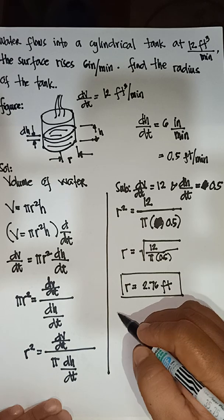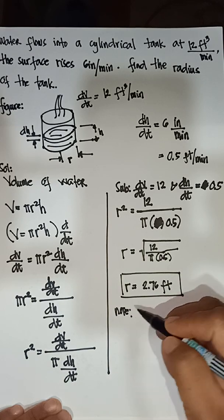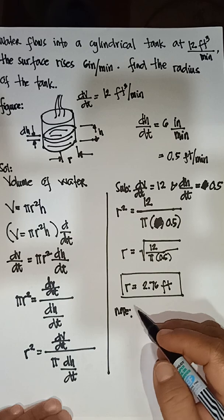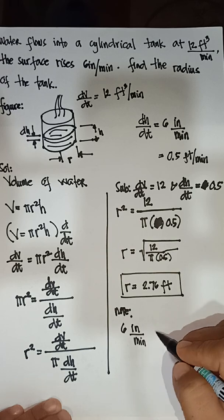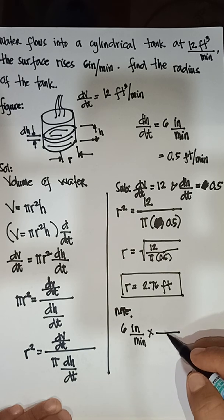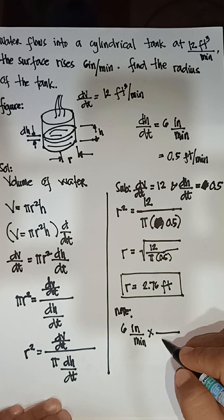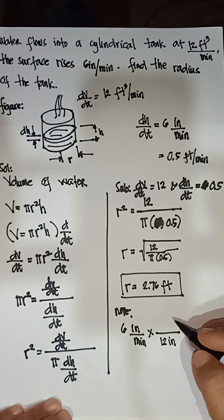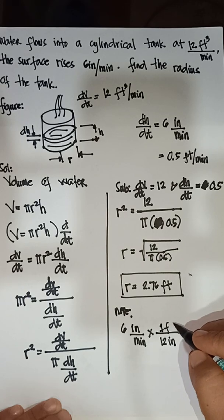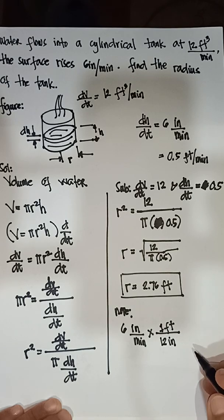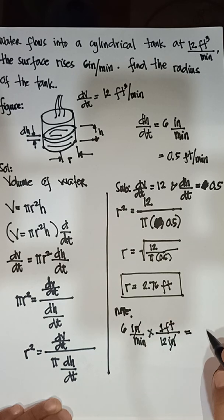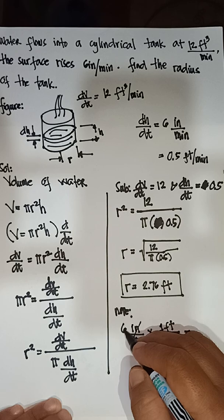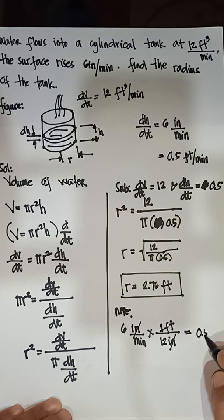If you have questions about how to convert 6 inches per minute to feet per minute: 6 inches times (1 foot / 12 inches) — cancel the inches — gives 6 divided by 12, which equals 0.5 feet per minute.